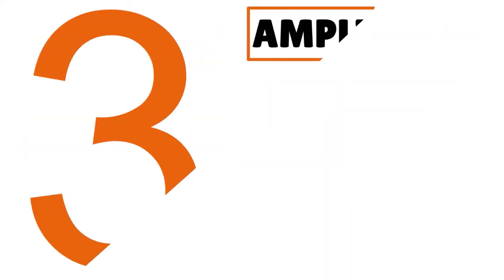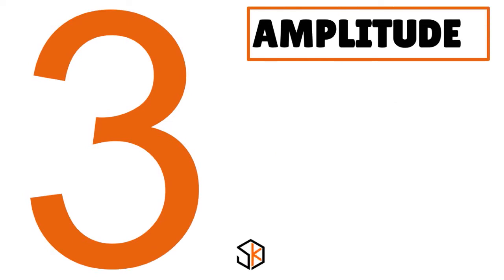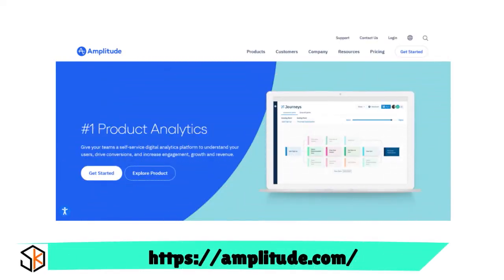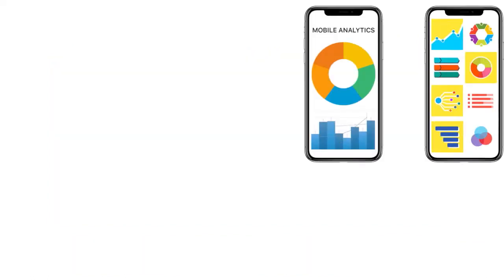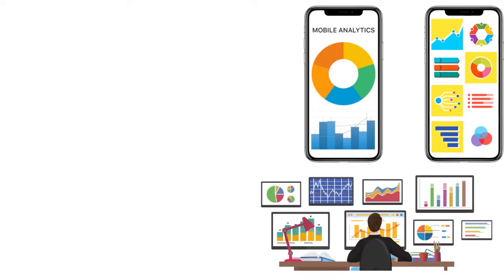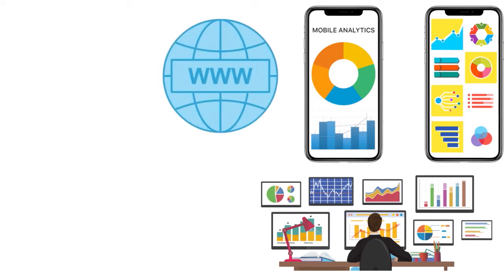Let's talk about Amplitude, the third player. Amplitude is an analytics tool that helps understand user behavior — a web and mobile analytics solution that enables marketers to get data from the behavioral layer. Amplitude provides individual data points to get all relevant information about user activity on the web.